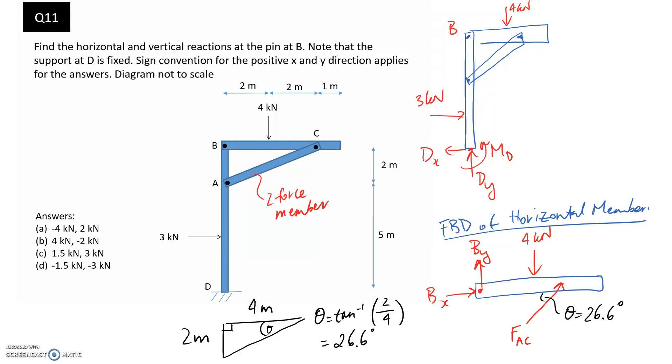We have our three equilibrium equations. Starting by summing moments at point B is a good approach, because both Bx and By act through the point, so they won't contribute a moment. The only unknown will be FAC. Once we've got that, we can apply our other two equilibrium equations and avoid simultaneous equations.